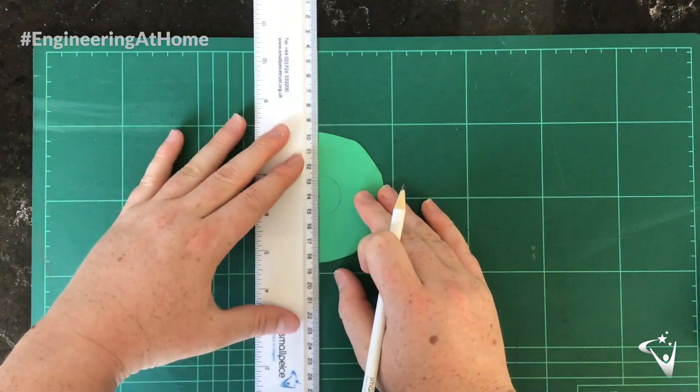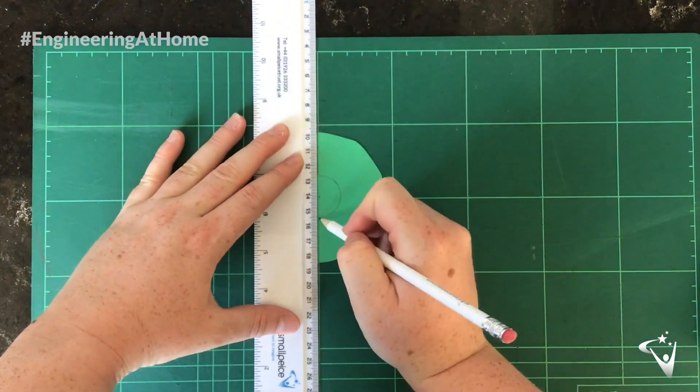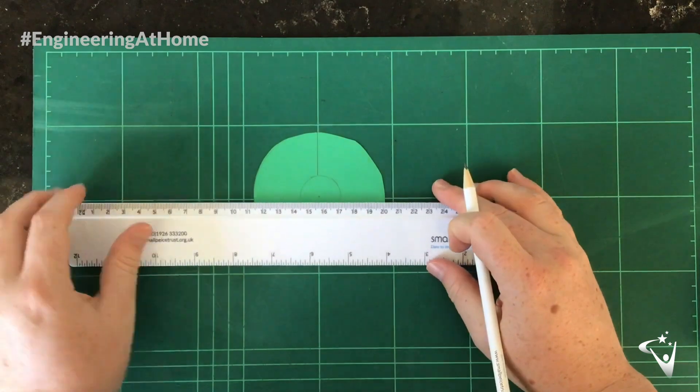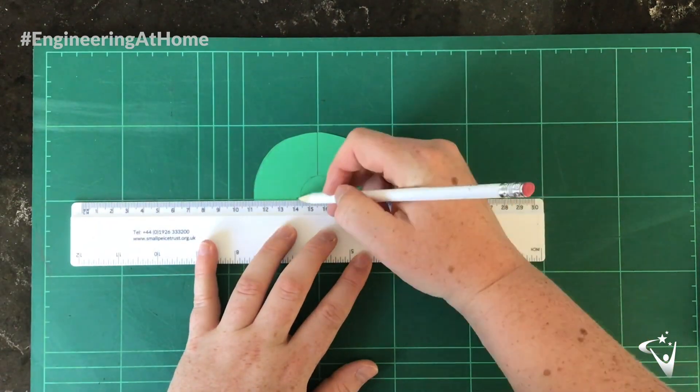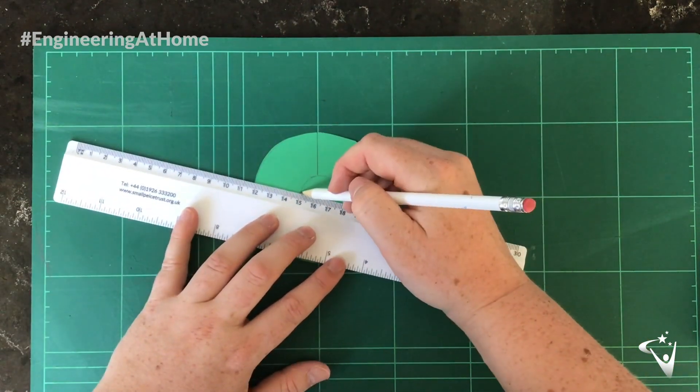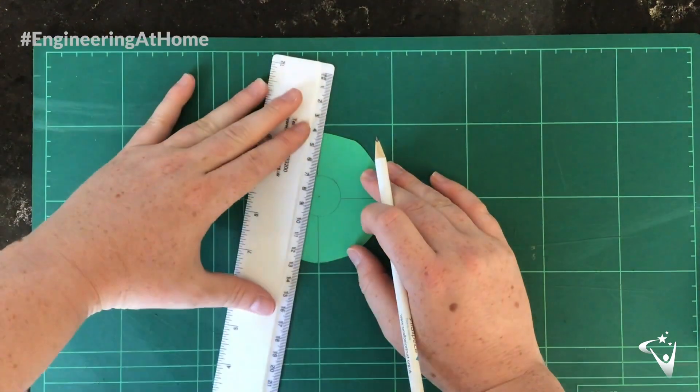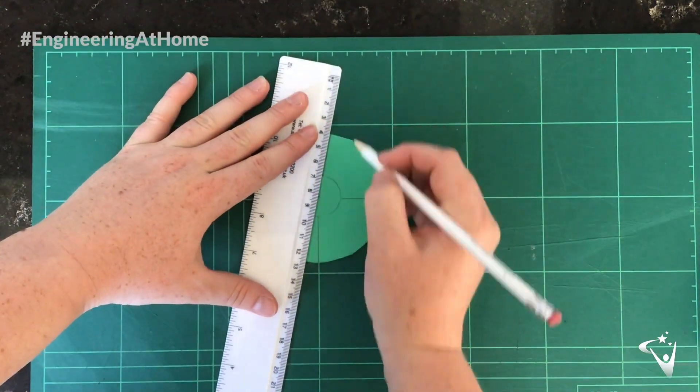Now you want to divide the outer ring into quarters. Then place another line about a centimeter clockwise from the original ones.